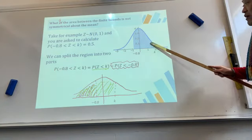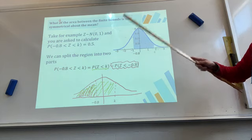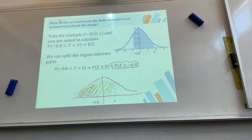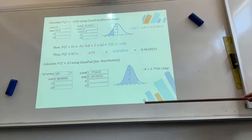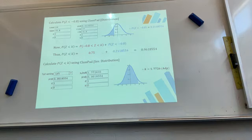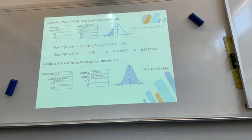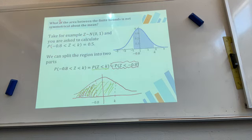Using this method, k works out to approximately 1.7726 to four decimal places. Note: the probability for the region between −0.8 and k is 0.75 — I mistakenly typed 0.5 earlier. The correct value is 0.75.